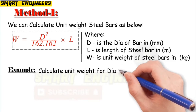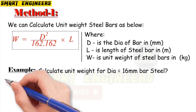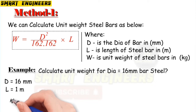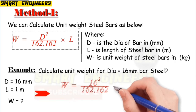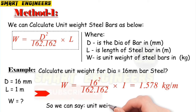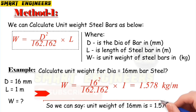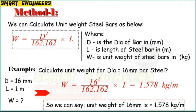To understand better, let's make an example. Calculate the unit weight per 16 millimeter bar steel. Here we know that D is 16 millimeters and L equals one meter. We will put these values in the formula, and we get the unit weight of 16 millimeter dia bar equals to 1.578 kilogram per meter length. This is the very first and common way to calculate the unit weight of steel bar. I will show you two other methods as well.